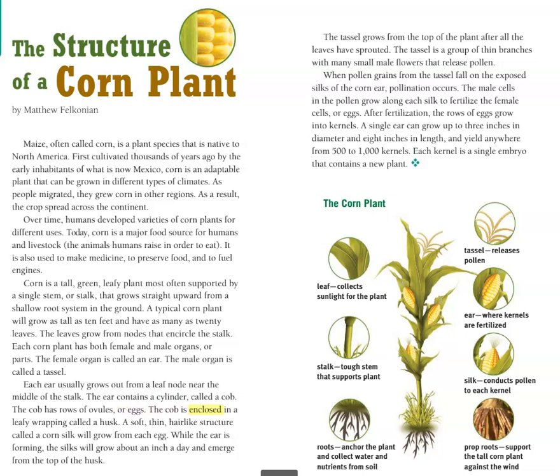The cob is enclosed in a leafy wrapping called a husk. A soft, thin, hair-like structure called a corn silk will grow from each egg. While the ear is forming, the silks will grow about an inch a day and emerge from the top of the husk.